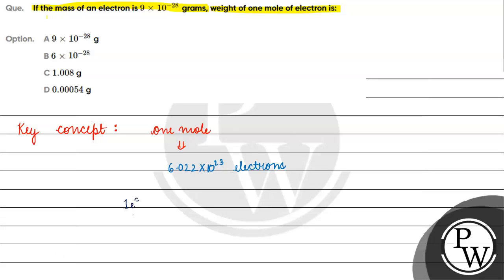If we know that 1 electron's mass is 9 into 10 raised to the power minus 28 grams, then 1 mole of electrons — that is 6.022 into 10 raised to the power 23 electrons — will have a mass of 9 into 10 raised to the power minus 28 grams into 6.022 into 10 raised to the power 23.